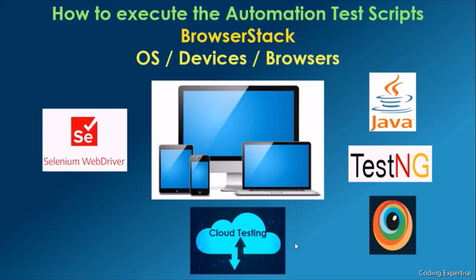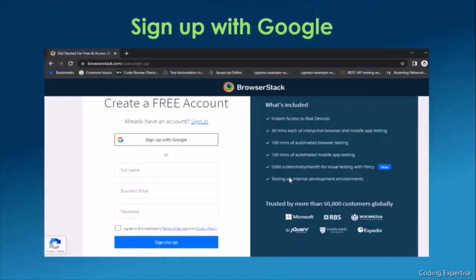Another challenge is the operating system — sometimes a test passes on Windows but fails on Mac. The biggest challenge overall is executing scripts on different browsers and devices, requiring engineers to find the right machines and set up environments. To overcome all these problems, BrowserStack provides a cloud testing environment through which we can run automation test scripts across different browsers, devices, and operating systems at an organization level. At an organizational level, you'd go for the BrowserStack paid version, but for practical purposes you can create a free account to get started.